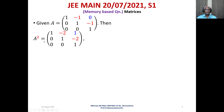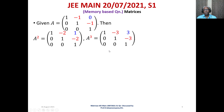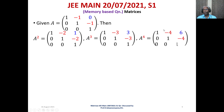Computing A²: the first row is [1, -2, 1], second row [0, 1, -2], third row [0, 0, 1]. For A³, observe the red and blue elements. A⁴ continues the pattern in this matrix.